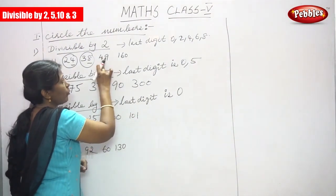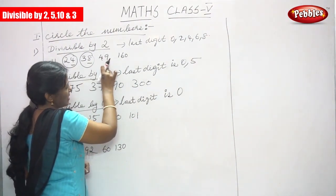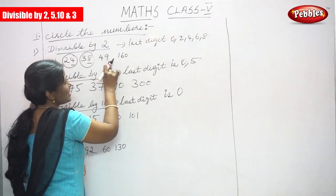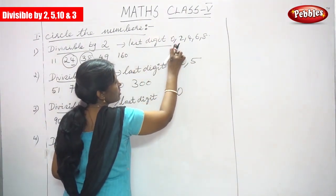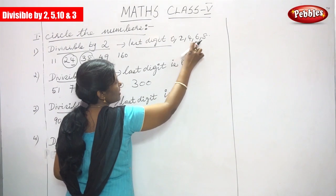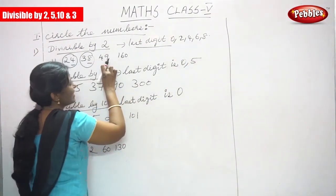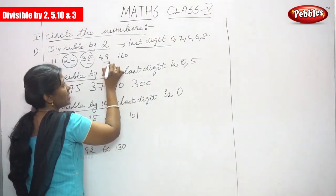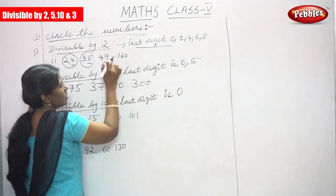Next, 49: 4, 9. The last digit is 9, which does not end with 0, 2, 4, 6, or 8. So the last digit is 9, and it is not divisible by 2.